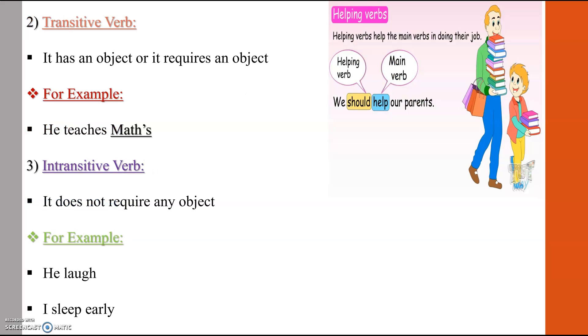The second type is transitive verb. Transitive verb has an object. It requires an object. It is an action which passes from the subject to an object that receives the action.